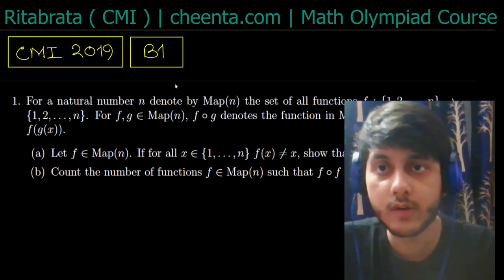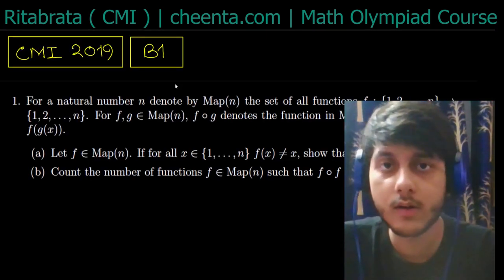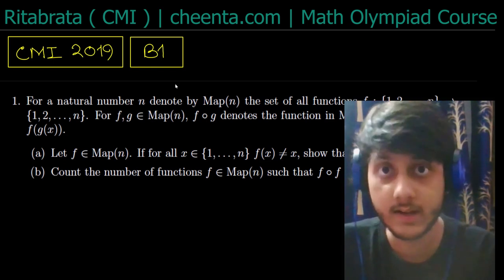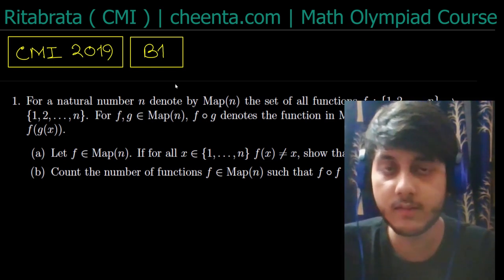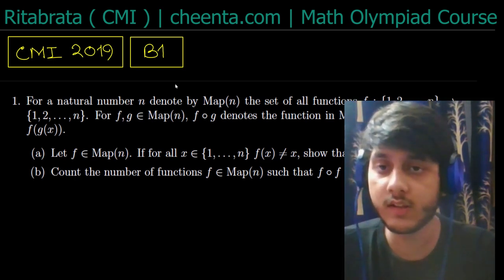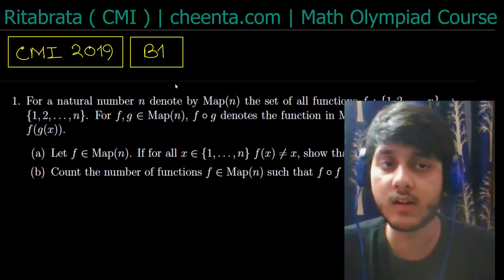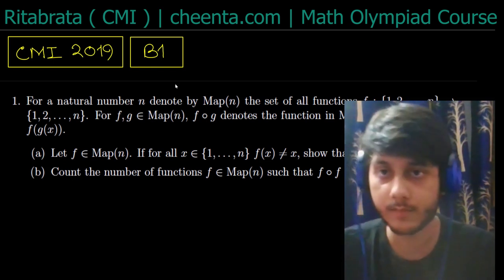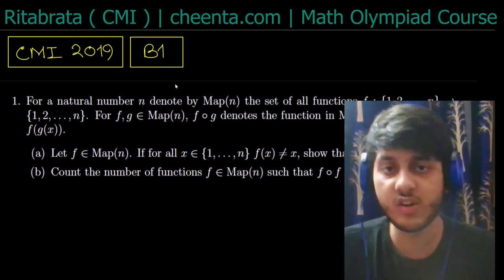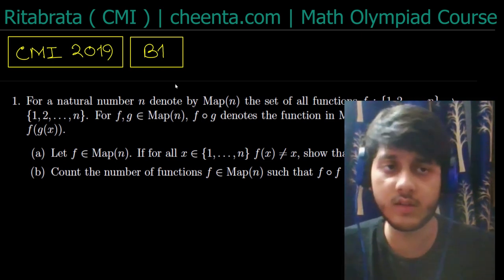Hello, today I want to discuss a problem that appeared in the CMI 2019 entrance exam. It's mainly a combinatorics problem — mainly counting. The question says: for a natural number n, we denote by Map(n) the set of all functions that map the set {1, ..., n} to {1, ..., n}. For f, g in Map(n), we define f∘g to be the composition of functions.